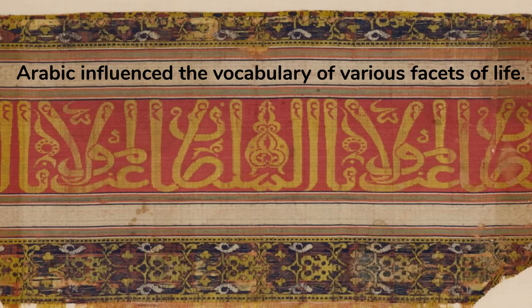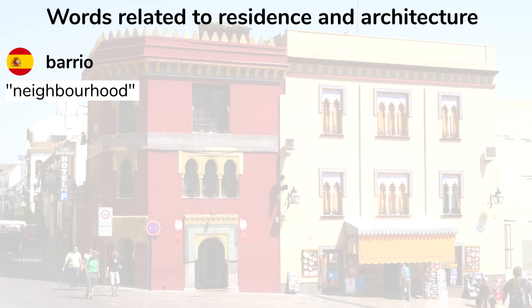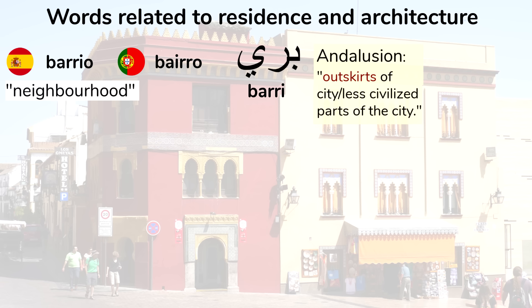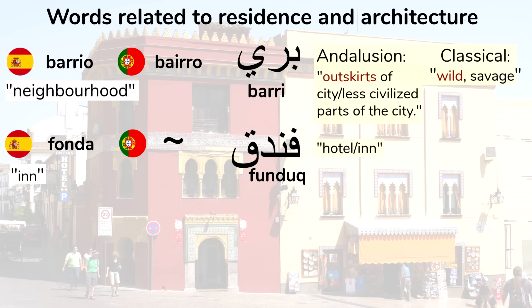Arabic influenced the vocabulary of various facets of life — words related to residence and architecture. In Spanish, meaning neighborhood; in Portuguese, from the Arabic word. In the Andalusian dialect of Arabic, this word meant the outskirts of the city, or the less civilized parts of the city. The original classical Arabic word means wild or savage. In Spanish, 'fonda,' meaning inn or hotel — there's no equivalent word used in Portuguese. This comes from the Arabic word 'funduk,' meaning inn or hotel.